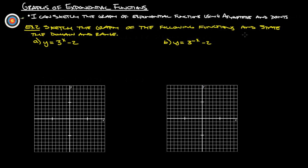Sketch the graph of the following functions and state the domain and the range. So we've got y equals three to the x minus two. This right here is our horizontal asymptote, so down here at negative two we're going to have an asymptote.